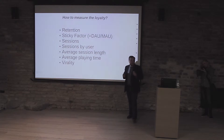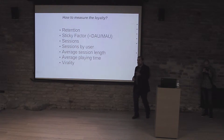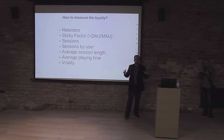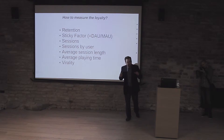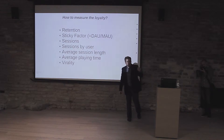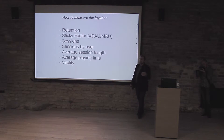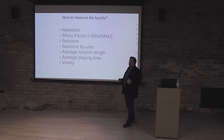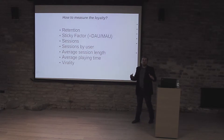One of my favorite metrics is sticky factor. To calculate the sticky factor, you need to divide daily active users by monthly active users. Imagine that in an ideal world you have a monthly audience of, for example, 1000 people, and every user visits the application every day. So your daily active audience will also be equal to 1000 users. When you divide 1000 by 1000, you will get a 100% result — that's the ideal value of sticky factor.